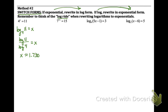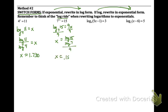Example 2: 7 to the 9x equals 15. The bases 7 and 15 cannot be rewritten using a common number raised to different powers, so switch forms: log base 7 of 15 equals 9x. Use change of base — log(15) divided by log(7) — then divide by 9 to get x approximately equal to 0.155.